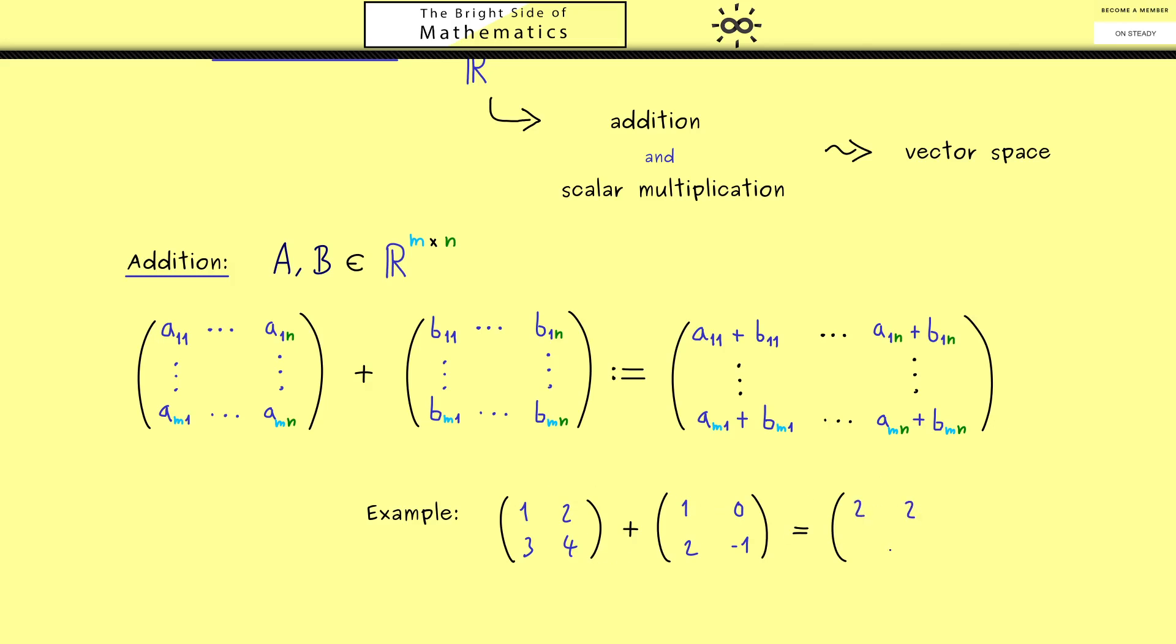Okay and then you should see this is 2, this is 2, this is 3 plus 2 so 5, and the other one is 3. So you see this was not hard at all and the end result is again a 2x2 matrix.